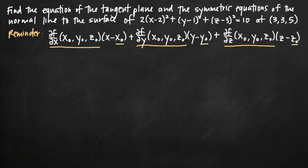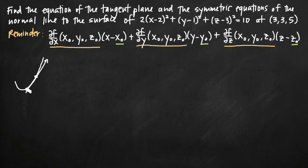Keep in mind that the tangent plane is the plane tangent to this surface equation. This is the multivariable version of the tangent line from single-variable calculus, where we found a line tangent to a function in the xy-plane. In multivariable calculus, we have a three-dimensional function, and that line becomes a plane — a plane that barely skims the surface and intersects it at only the given point (3, 3, 5).